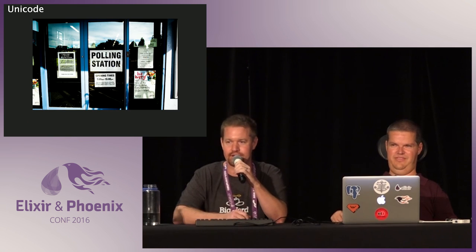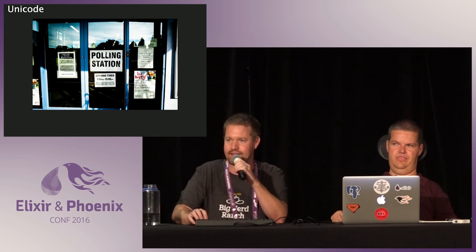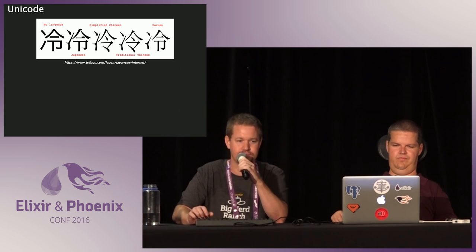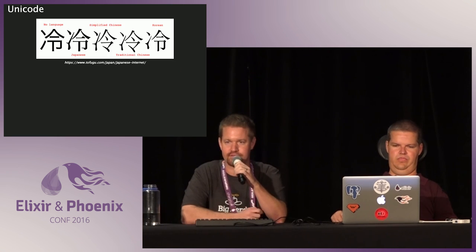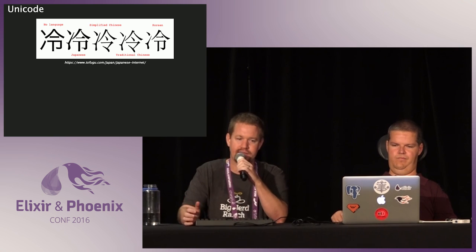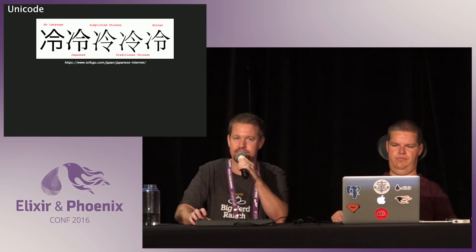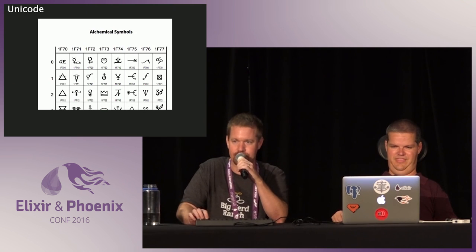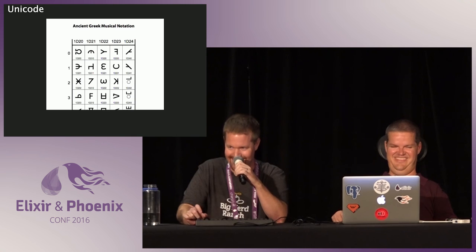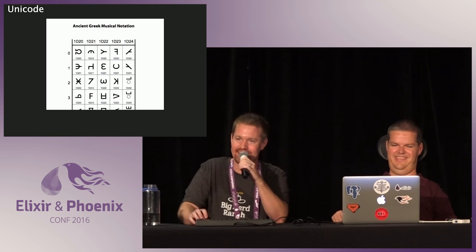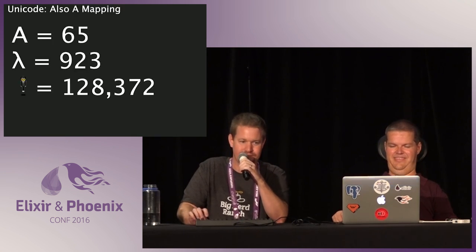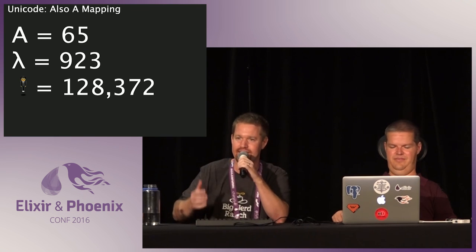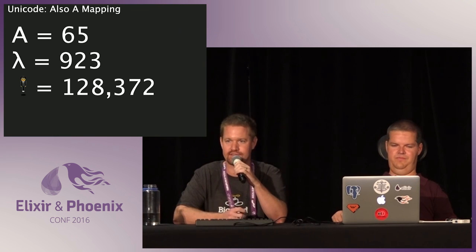Exactly what gets included in the Unicode standard is kind of a political thing. There's a thing called Han unification whereby people who type Japanese, Chinese, and Korean have been asked to share some characters, ostensibly to save space in the Unicode standard — even though Unicode did see fit to include playing cards, alchemy symbols, and ancient Greek musical notation, and they're adding Linear B, which only scholars would ever type. But in the end, this is just a mapping — we can include anything we want, and in theory we can fit all human characters in here.